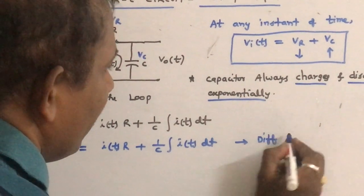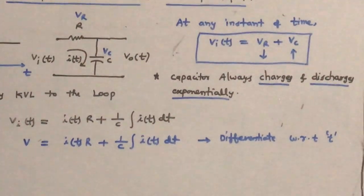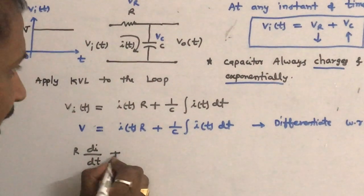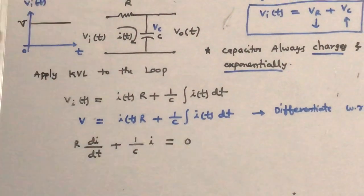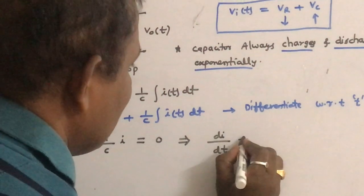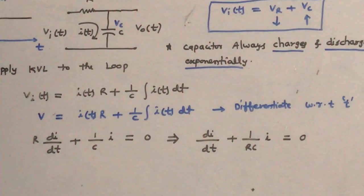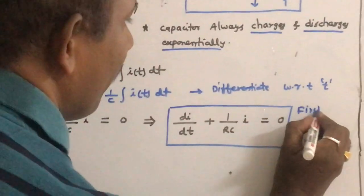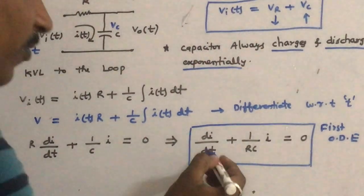Now differentiate this equation with respect to t and rearrange the terms. The first term is R·(di/dt). Since differentiation and integration cancel out, we get (1/C)·i. The constant voltage differentiation is 0. Dividing by R: di/dt + (1/RC)·i = 0. This is the first order differential equation, which can be very easily solved for current with respect to time.